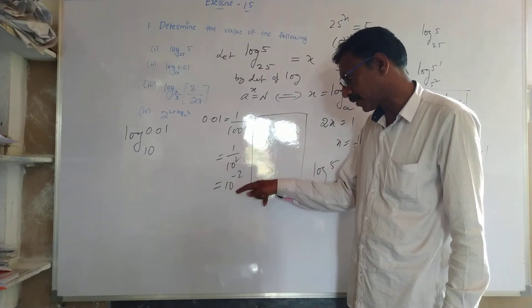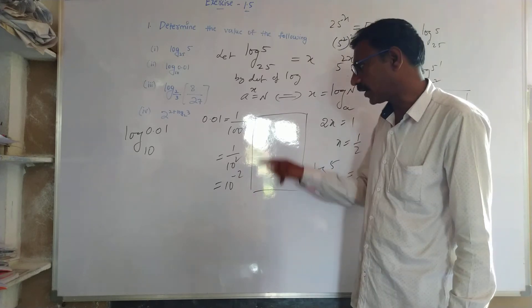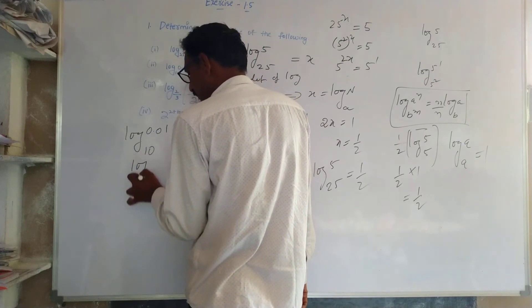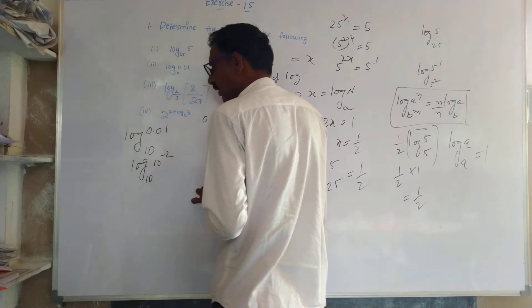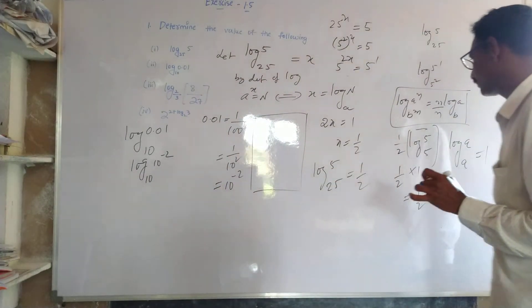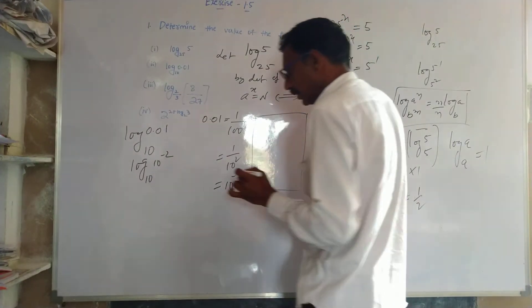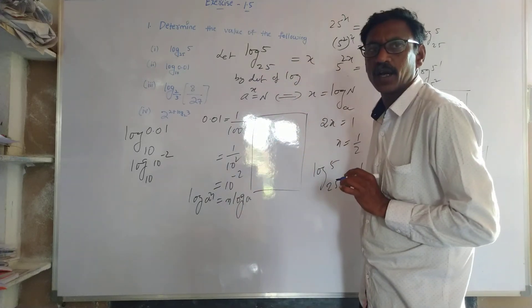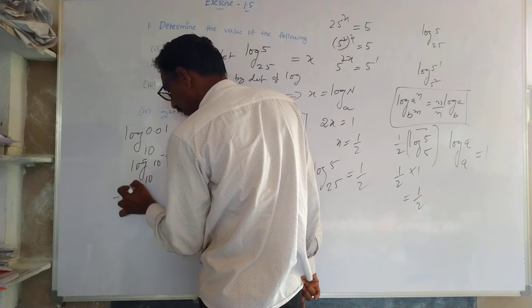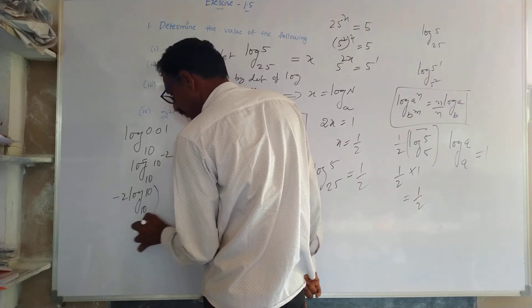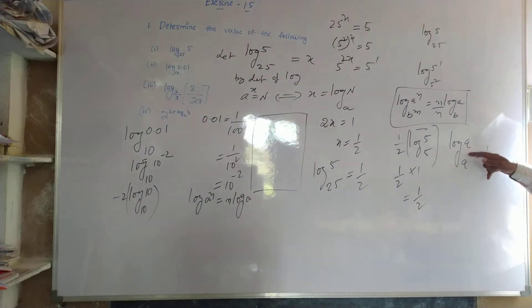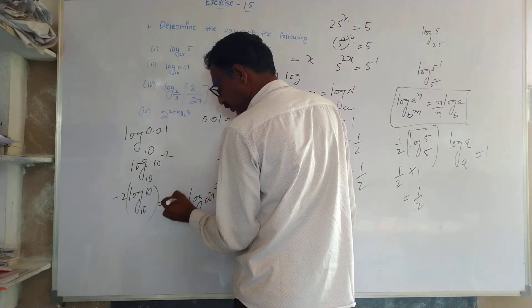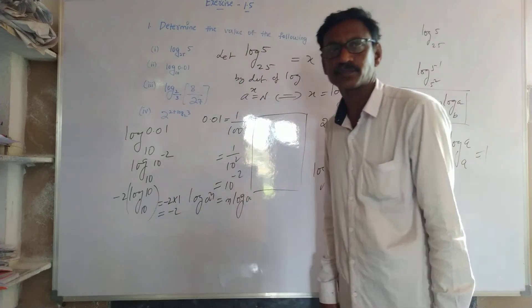10 to the power of minus 2. Total 0.01 means 10 to the power of minus 2. Same thing, logarithm 10 to the power of minus 2 to the base 10. Now that's already given. Logarithm of sum a power of minus 1 is equals to n. By that definition, here minus 2, minus 2 logarithm of 10 to the base 10. 10 to the base 10, the formula is equal to 1. So minus 2 times 1, that is equals to minus 2. Clear?